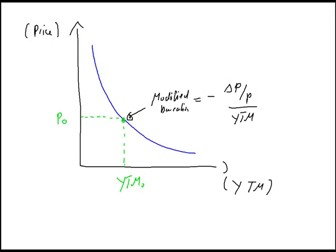So that means we can now visualize modified duration at this point. It is nothing else than the slope that we have at this price function at the point P0, yield to maturity y0. The slope at this point can be visualized with a tangent, and along this tangent we have the same slope as at the point P0, yield to maturity y0.